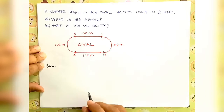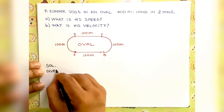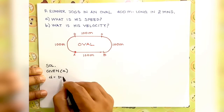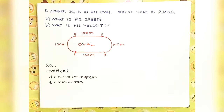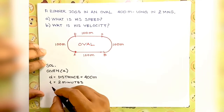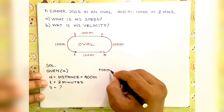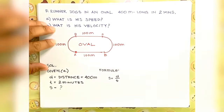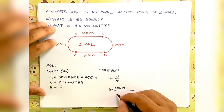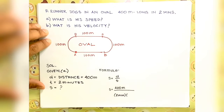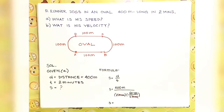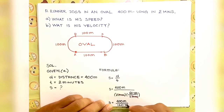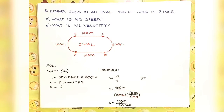For our solution, solving for letter A: the given values are distance = 400 meters, and time = 2 minutes. We will convert 2 minutes into seconds. The formula for speed is distance over time. Speed equals 400 meters over 2 minutes — converting minutes to seconds, remembering that 1 minute equals 60 seconds, we get 400 meters over 120 seconds. Therefore, the speed equals 3.33 meters per second.